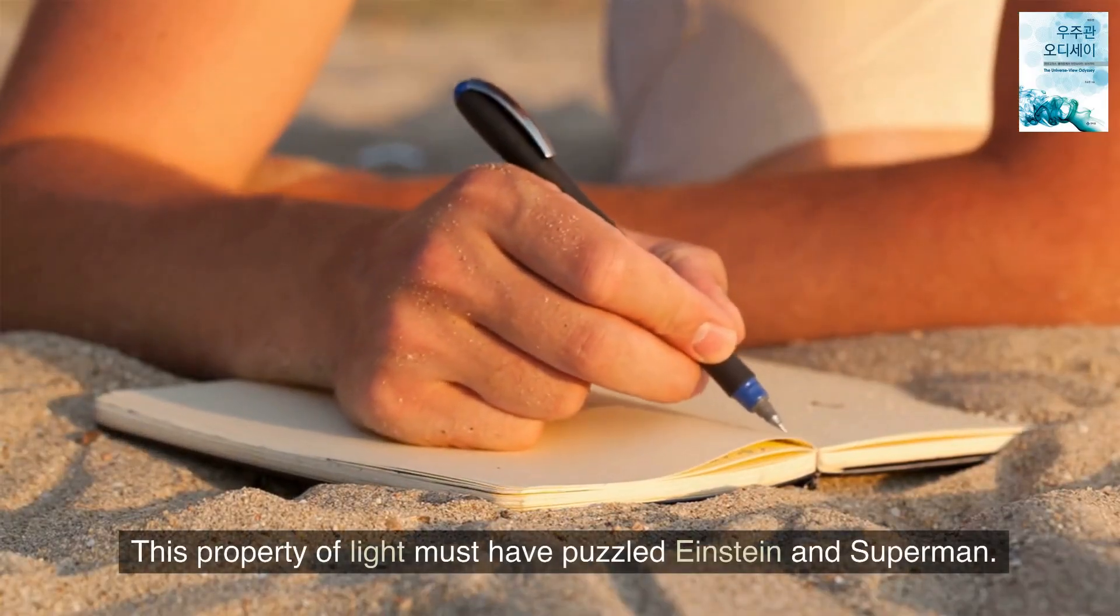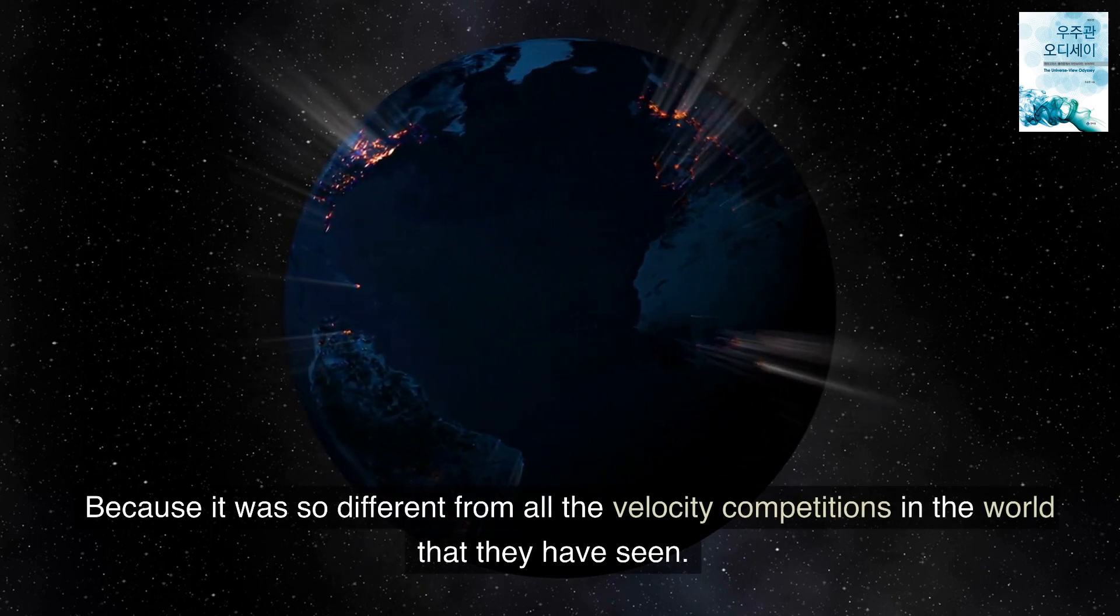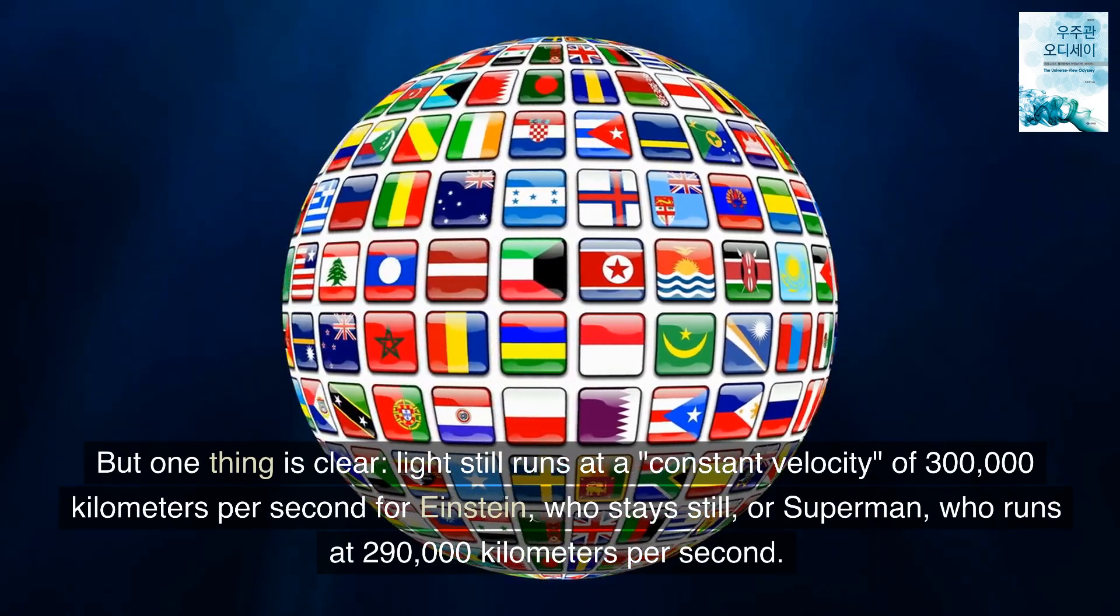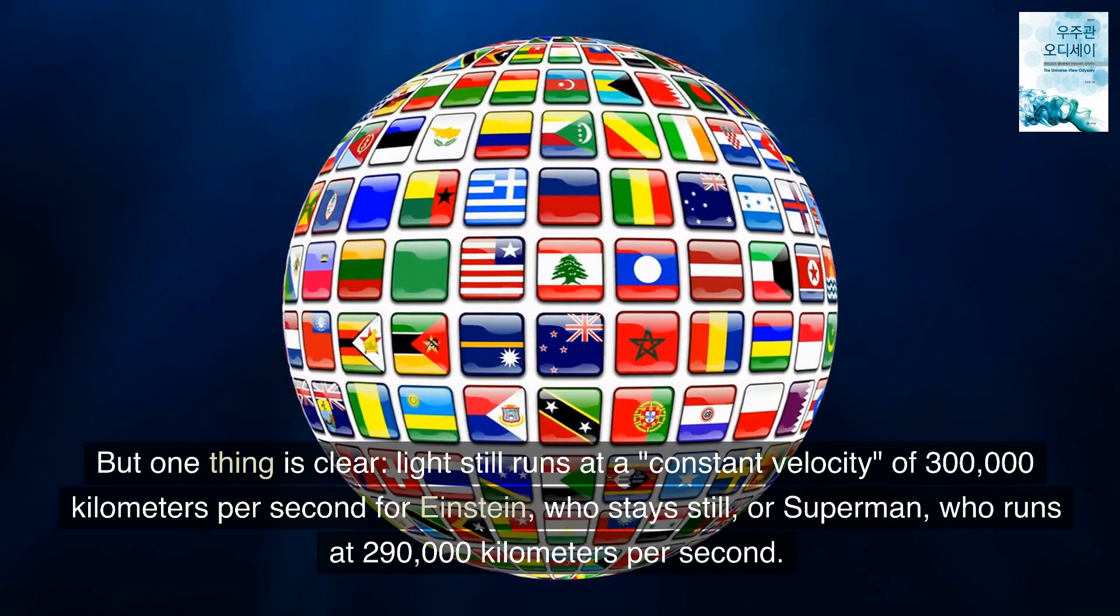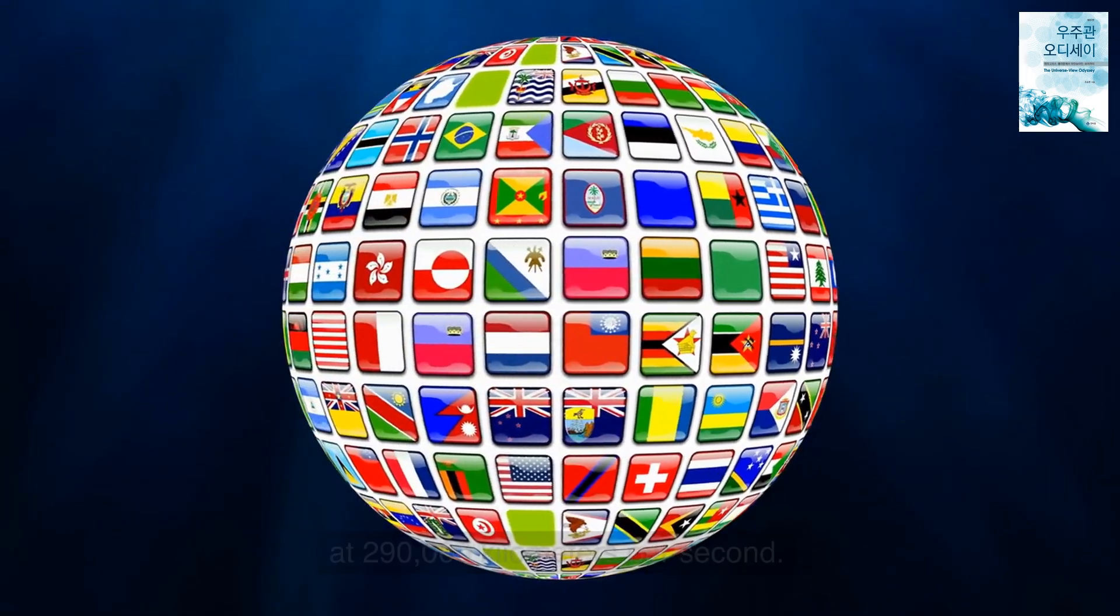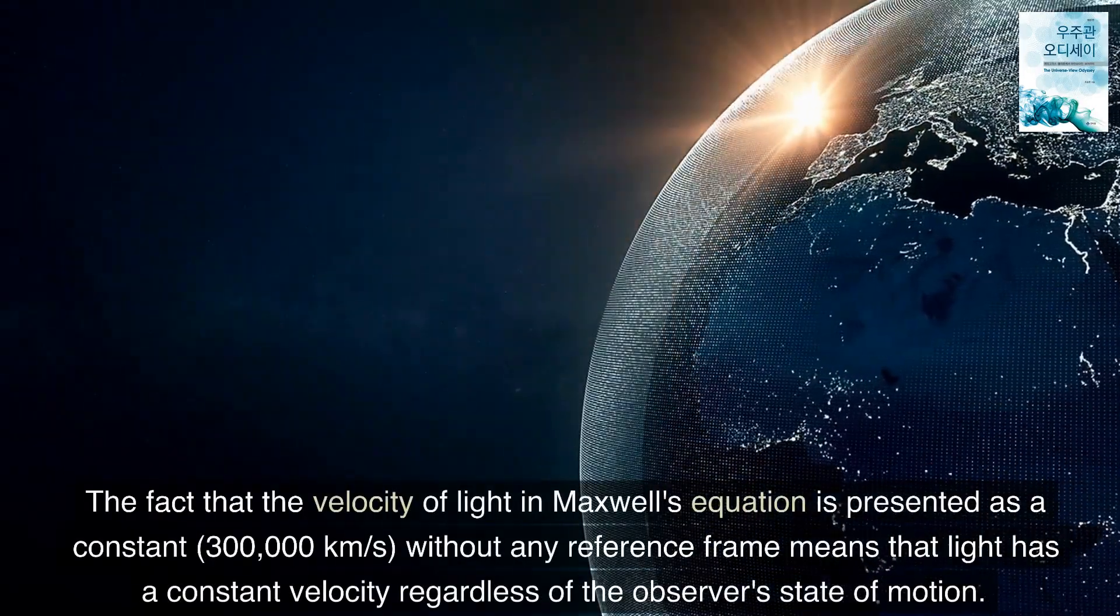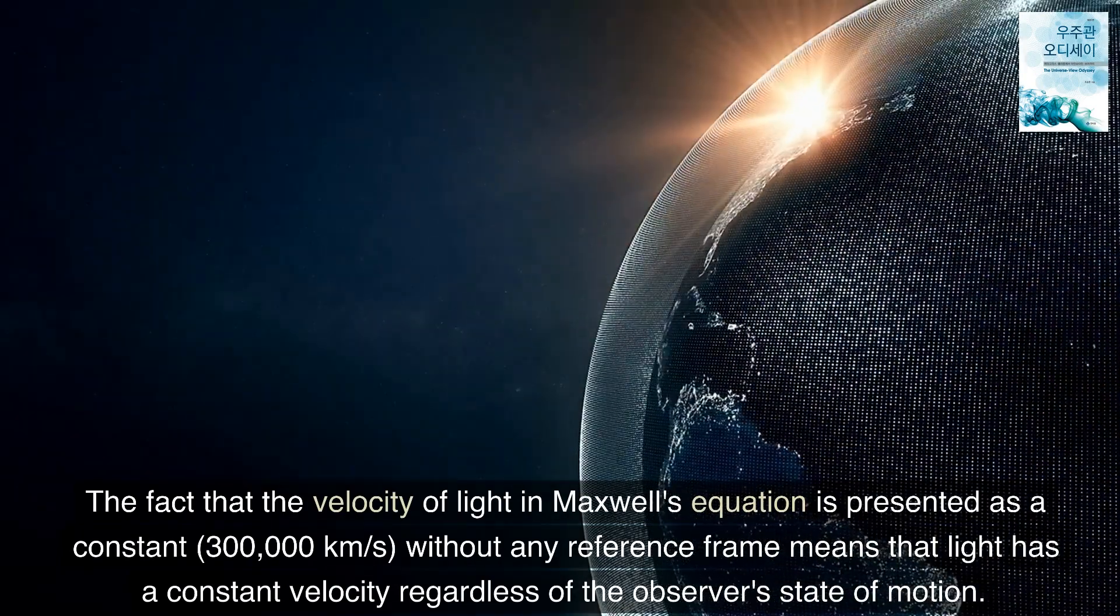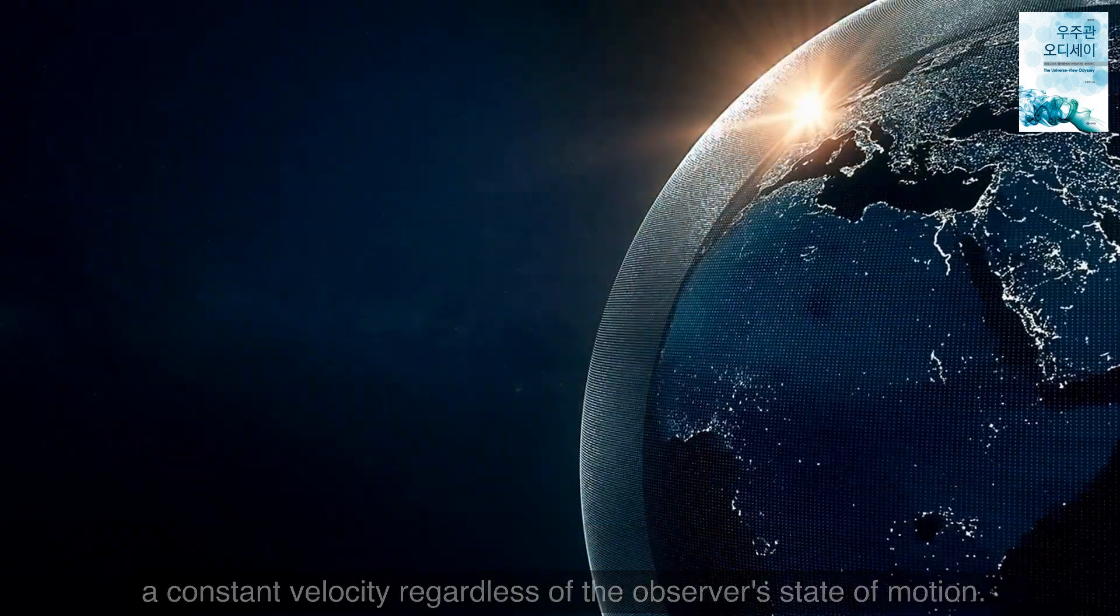This property of light must have puzzled Einstein and Superman, because it was so different from all the velocity competitions in the world that they have seen. But one thing is clear. Light still runs at a constant velocity of 300,000 kilometers per second for Einstein who stays still or Superman who runs at 290,000 kilometers per second. Einstein noticed this. The fact that the velocity of light in Maxwell's equation is presented as a constant 300,000 kilometers per second without any reference frame means that light has a constant velocity regardless of the observer's state of motion.